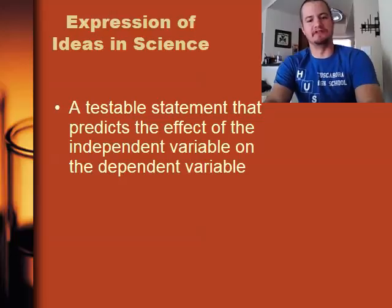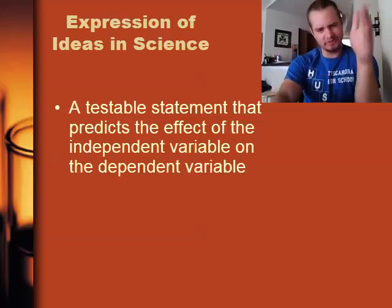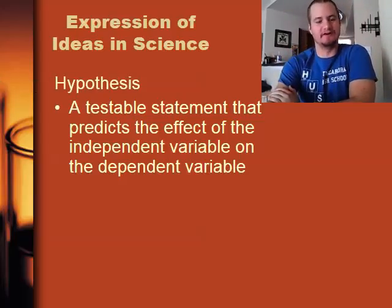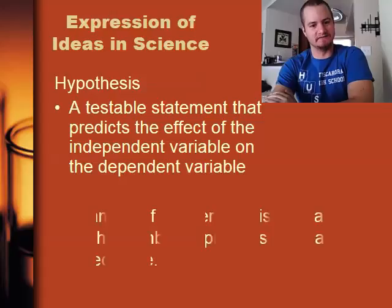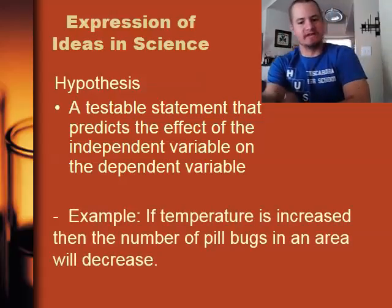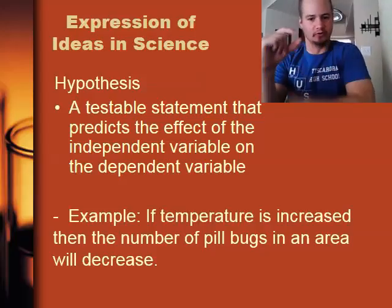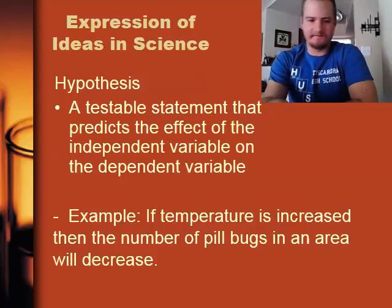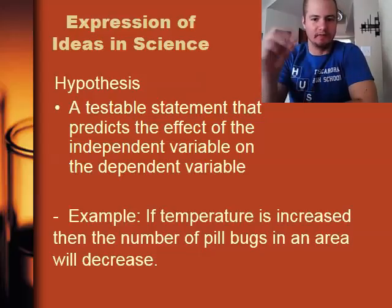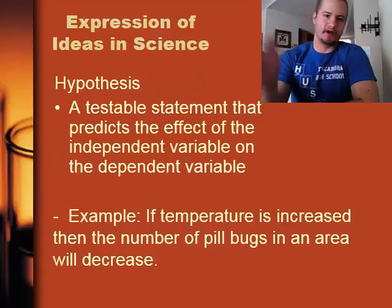A testable statement that predicts the effect of the independent variable on the dependent variable. If you watched the last video, you should know what this is. That's right, this is a hypothesis. We know that a hypothesis is an if-then statement that can be tested. An example would be: if temperature is increased in an area, then the number of pill bugs in that area will decrease. Pill bugs are these small little roly-polies. When you poke them, they curl up into a ball. They're not a big fan of heat. So if we increase the temperature in an area, the pill bug should move away. An if-then statement, testable, and based off of prior research.